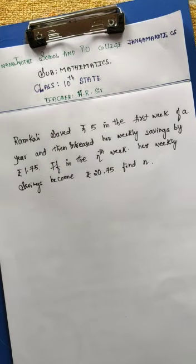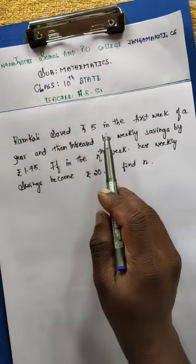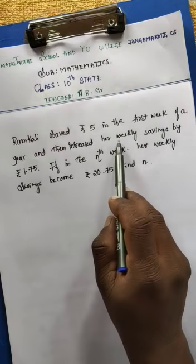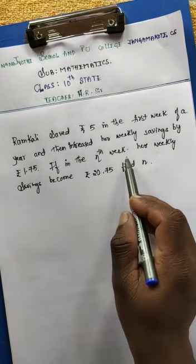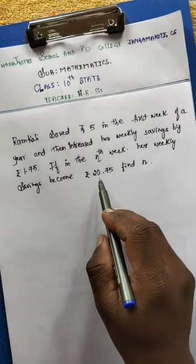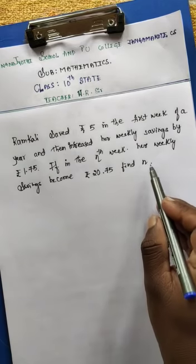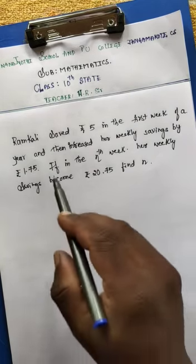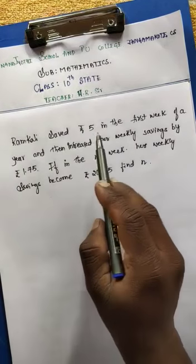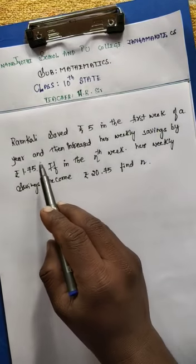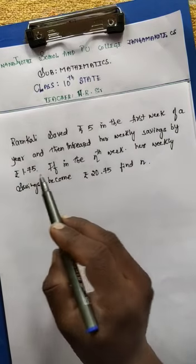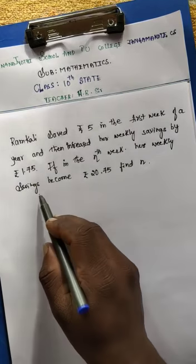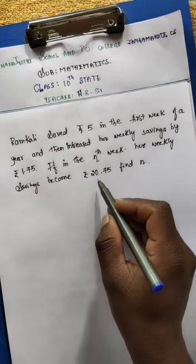Okay, come to next under Exercise 1.2, last question 28. Ram Kali saved rupees 5 in the first week of a year and then increased her weekly savings by rupees 1 rupee 75 paisa. If in the nth week her weekly savings becomes 20 rupees 75 paisa, find n. I'll repeat the question once again: Ram Kali saved rupees 5 in the first week of a year and then increased her weekly savings by 1 rupee 75 paisa. If in the nth week her weekly savings becomes 20 rupees 75 paisa, find n.